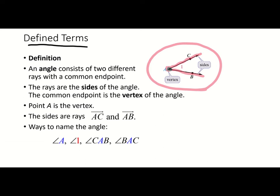Point A is the vertex of this angle. Now when you name an angle there are several different ways. You can sometimes just name it by its vertex, so you could call it angle A, or they put a number in to delineate the angle, so you can call it angle one. Most of the time we're going to use three letters — two points on the rays and then the vertex. The vertex always has to be in the middle, so this is angle CAB or angle BAC.